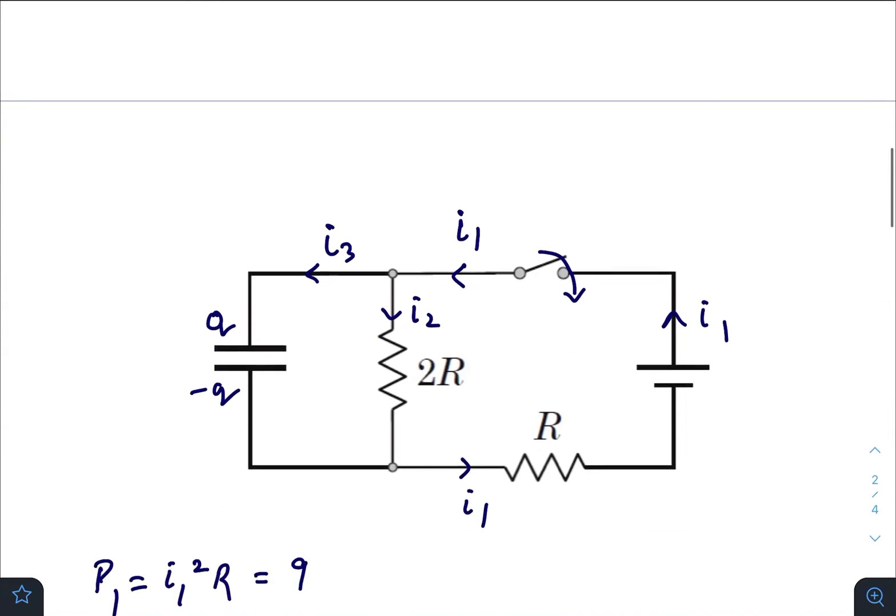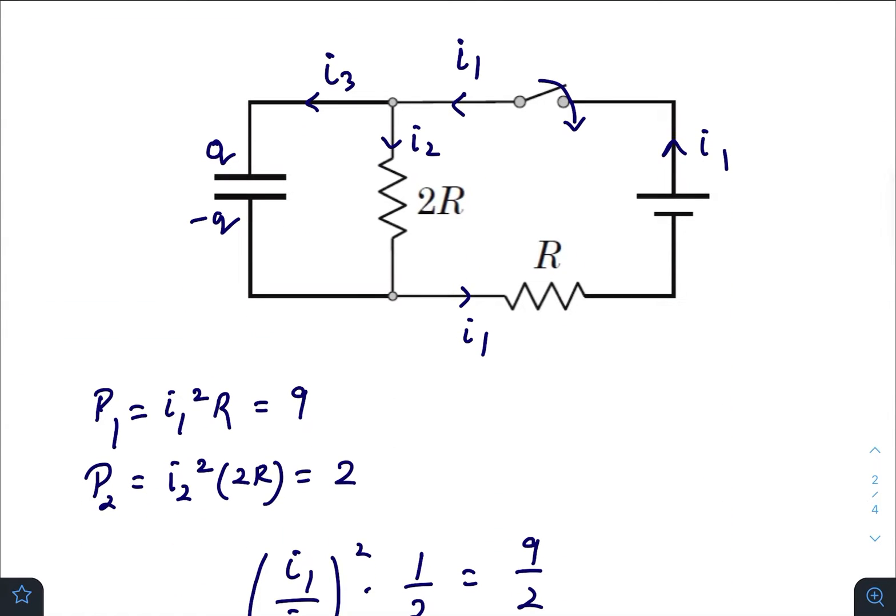Let's draw the diagram. Here you can see I have considered at that instant current I₁ flowing through the battery, getting divided into I₃ and I₂. These two currents add up to I₁ flowing through resistance R.